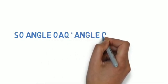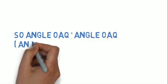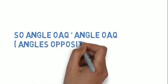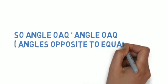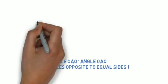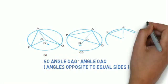So angle OAQ is equal to angle OAP, because angles opposite to equal sides are always equal. I have told you in the figure. Now let's see the figure again to make you understand more perfectly.